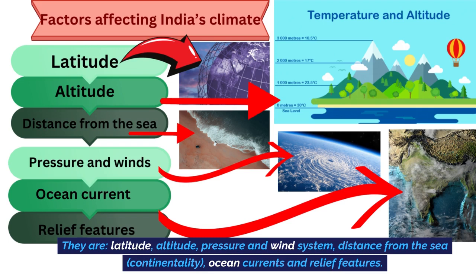The first factor is latitude. Since the world is a sphere, not all places receive the same amount of sunlight. As we move from the equator to the poles, the temperature drops. The second factor is altitude — as we climb higher above the surface of the earth, the temperature drops, which is called NLR, normal lapse rate: 6.5 degrees Celsius temperature drops per 1 kilometer.